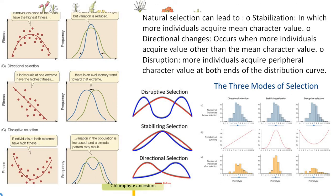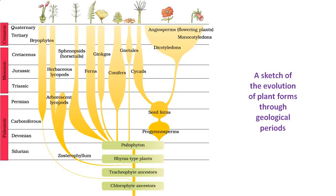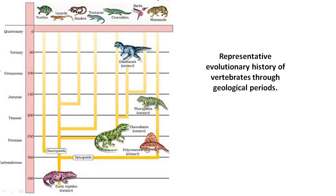A brief account of evolution can be seen in your NCERT book — a sketch of evolution of plant forms through geological periods: Silurian, Devonian, Carboniferous, Permian, Triassic, Jurassic, Cretaceous, Tertiary, and Quaternary — these are the time scales. You need to memorize these; there are useful mnemonic videos on YouTube. You can also see the representative evolutionary history of vertebrates through various geological periods: in the Carboniferous-Permian-Triassic era you can see turtles, snakes, tortoises, crocodiles, and birds all evolved. You have to remember this.